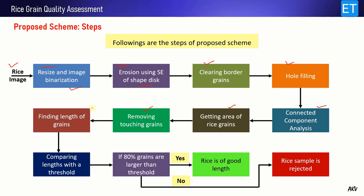After this step we have the rice grains which are isolated from each other. Then we find the length of each rice grain, and comparing the length with a threshold we find the outcome. The condition is: if 80 percent of the rice grains are above the threshold, then the rice is of good length; otherwise the rice sample is rejected.